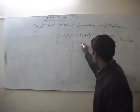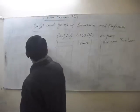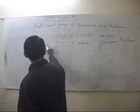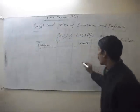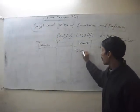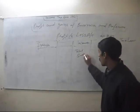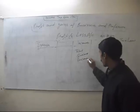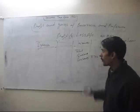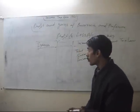In the credit side, these are our incomes, and in the debit side, these are our expenses. Total business incomes will be on the credit side. Now, the debit side of expenses is important.